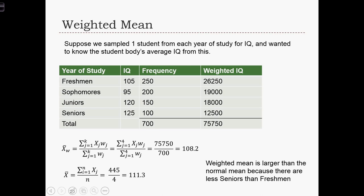We sample a freshman, a sophomore, a junior, and a senior. And we give each of those four students an IQ test. And we record the IQ of those four students in this table.